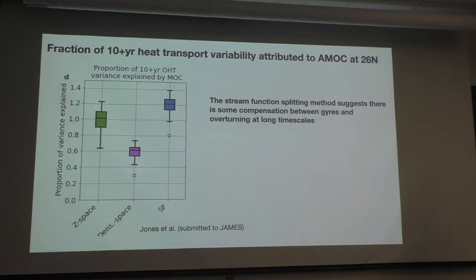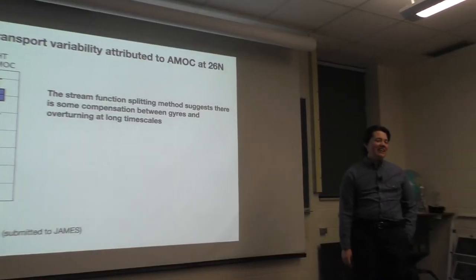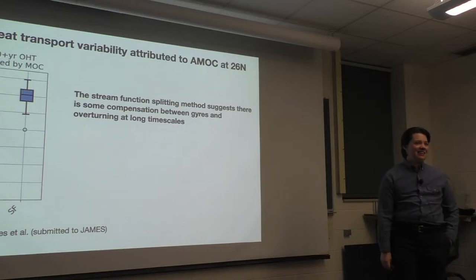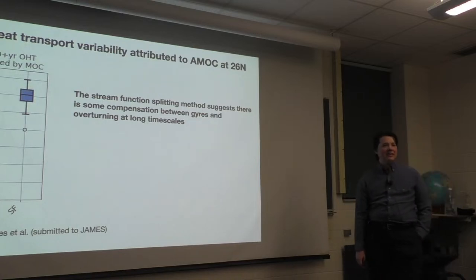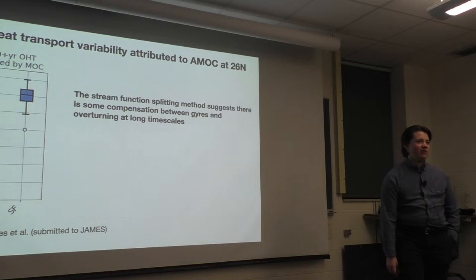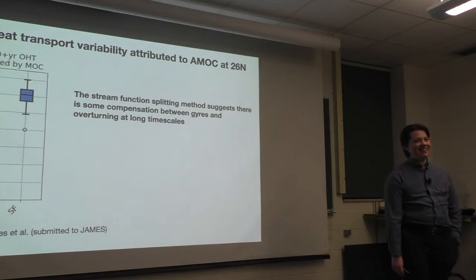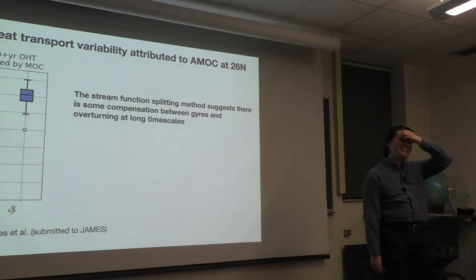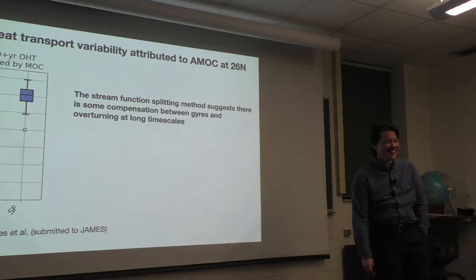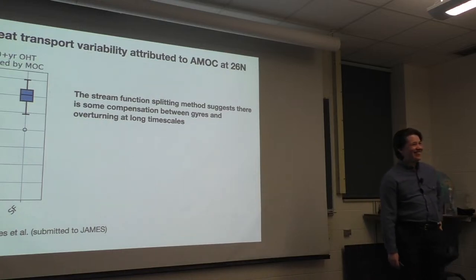Evan asks: could you do a lag analysis to step through this compensation physically — after a certain period of AMOC transporting more water northward, do you see a shift in the latitude of the gyre, and can you find the timescales at which that's happening? Given that you only see the compensation at low frequency. Spencer: I think that's a good idea. Something you could also do in the historical run where you have a really long period to work with. I have not done it — I've been trying to finish this paper — but yes, that's a good idea. Let's thank our speaker once more.